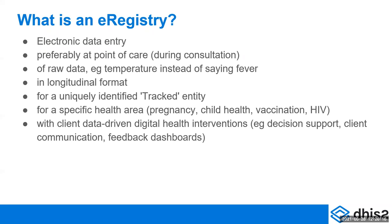For example, maybe a T count for HIV was initially categorized one way and now it's categorized another way. If you want to go back to historical data and recalculate how many people were in one category versus another, you can't do that if you've been just entering the category. So for e-registry, you enter the raw data and the system determines the classification.